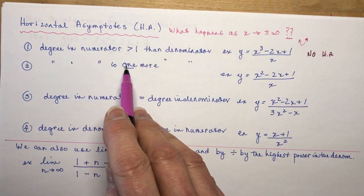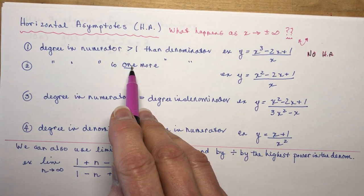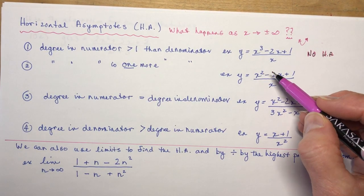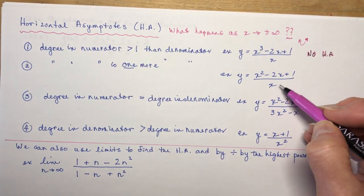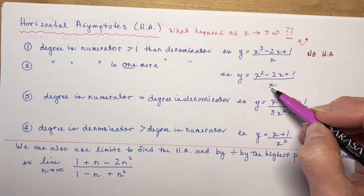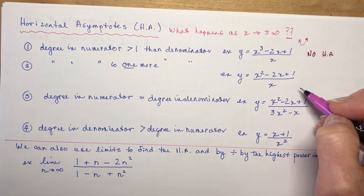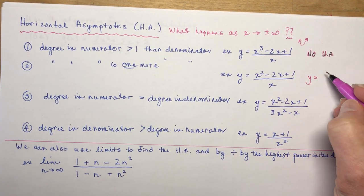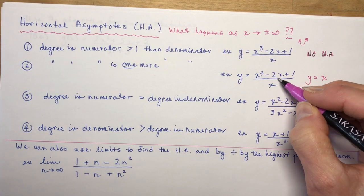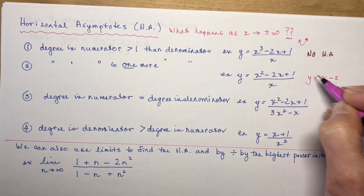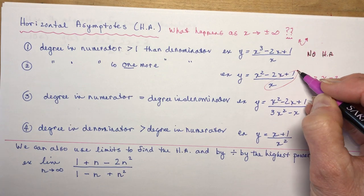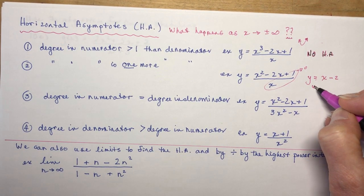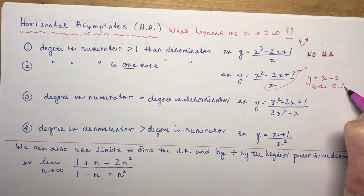Case 2: degree of numerator is exactly one more than denominator. For (x² − 2x + 1)/x, divide each term: x² by x gives x, −2x by x gives −2, and 1/x approaches 0. So the oblique asymptote is y = x − 2.